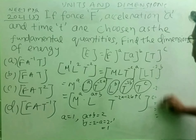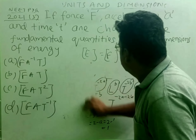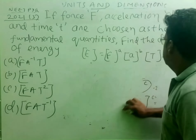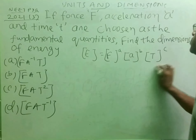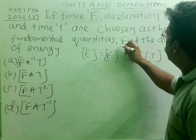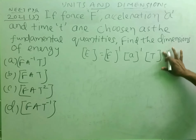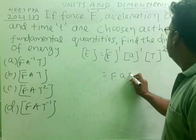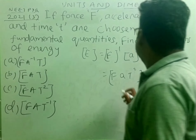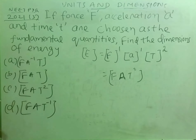So the values we found are: a equals 1, b equals 1, and c equals 2. Substituting these exponents into the formula, the expression for energy in terms of F, a, and t is: E equals F¹ · a¹ · t². So the answer is F·a·t² — that is option C. Option C is correct, students.